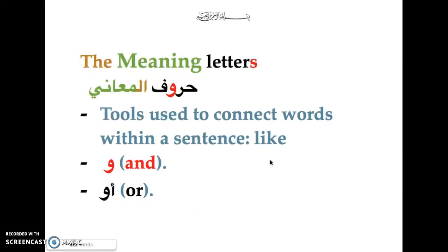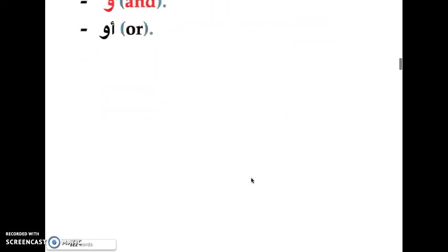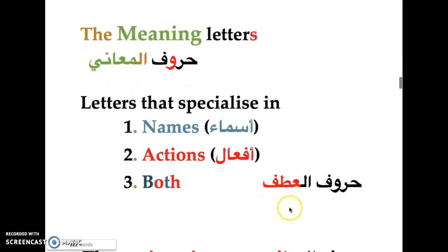This is the definition of حروف المعاني — the meaning letters. They are basically tools used to connect words within a sentence, like 'or' or 'and' — in Arabic: وَا and أو. There are many definitions but this one captures it well: tools used to connect words within a sentence.